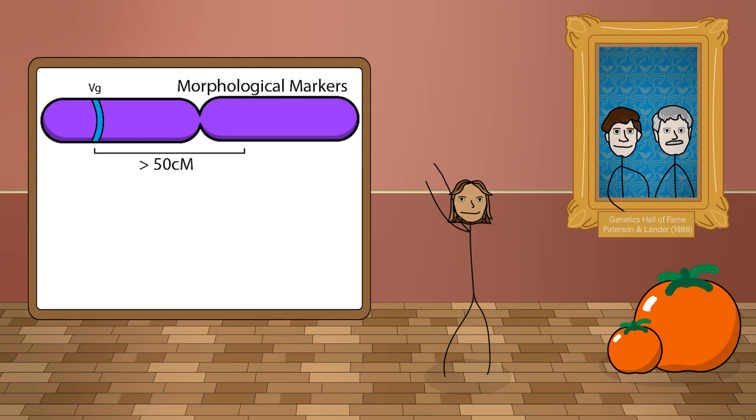However, these were scarce and unevenly distributed. It was nearly impossible to find a set of these markers which covered every 50 centimorgan linkage region, and thus they left blind spots in the genome.